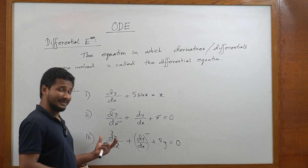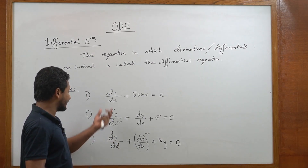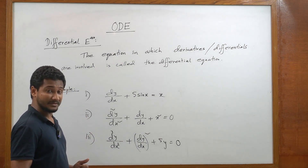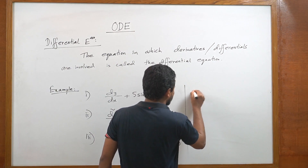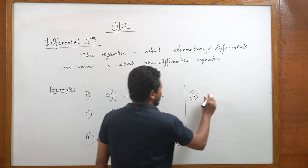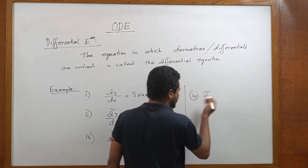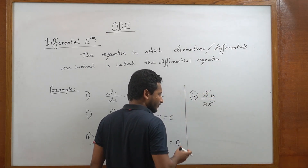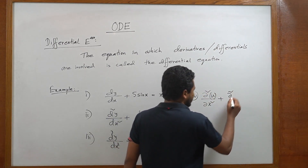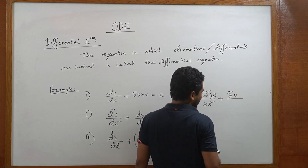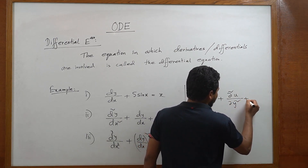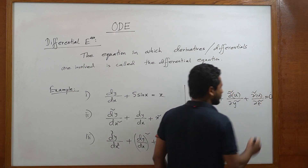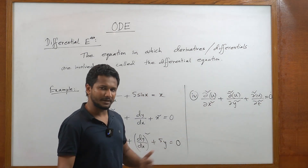Here we can see the derivatives are not partial, but partial derivatives can also be present. So the fourth example: ∂²u/∂x² + ∂²u/∂y² + ∂²u/∂z² = 0. So this equation can also be a differential equation.